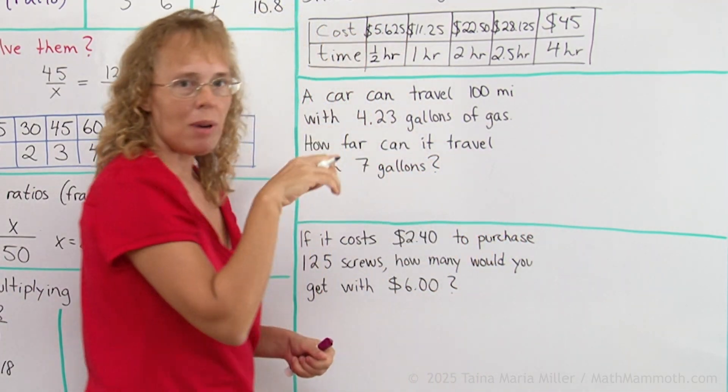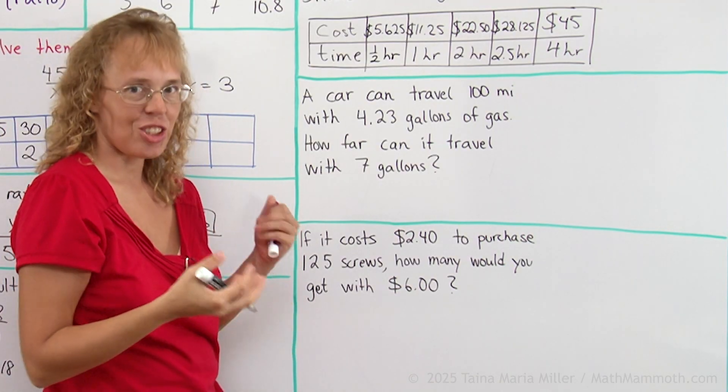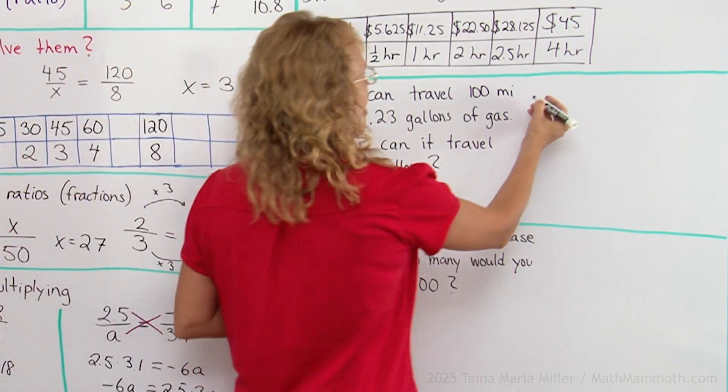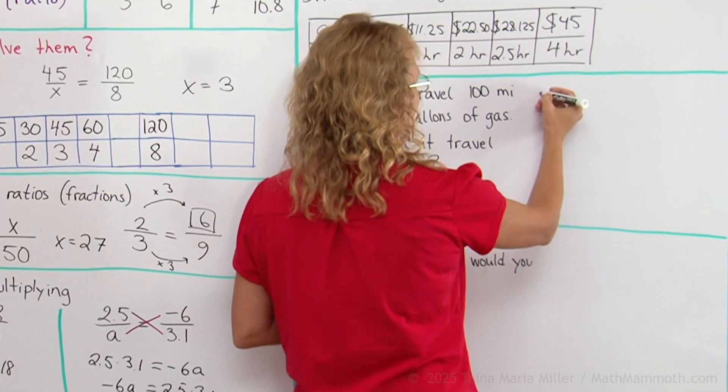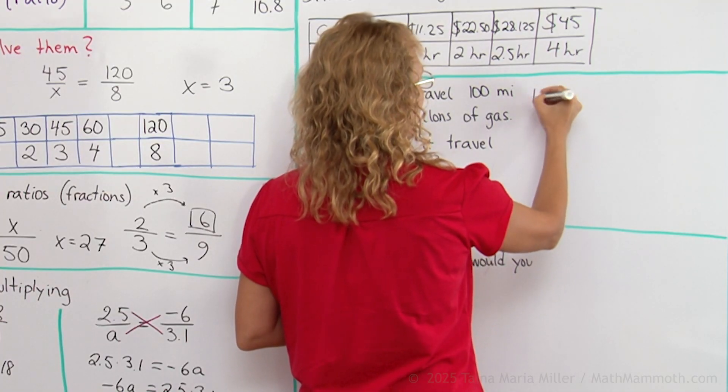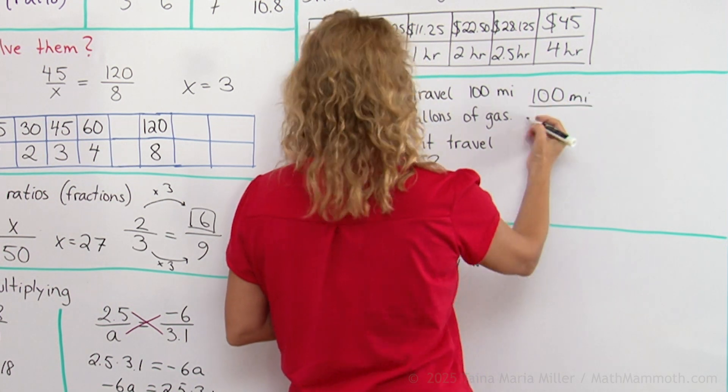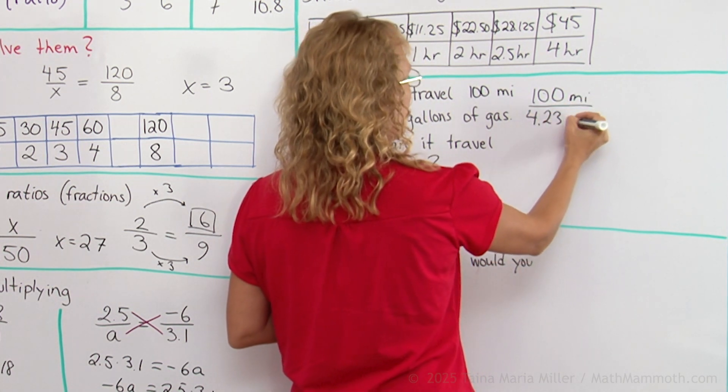I can put it as miles over gallons or gallons over miles, that actually does not matter. But usually people talk about miles per gallon, so I'll put miles on top, 100 miles per 4.23 gallons.